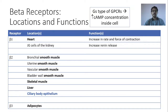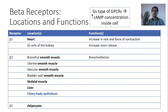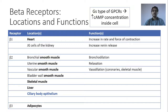Beta-2 receptors are located in various smooth muscles. Beta-2 receptor activation leads to increase in cyclic AMP and therefore relaxation of smooth muscle. Whenever adrenaline activates beta-2 receptors, there is relaxation: bronchial smooth muscle relaxes leading to bronchodilation, increasing oxygen intake for fight-or-flight. Uterine smooth muscle also relaxes. Vascular smooth muscle relaxes leading to vasodilation, predominantly in coronaries and skeletal muscles — increasing blood supply to the heart and skeletal muscle so the body can fight or run away efficiently.